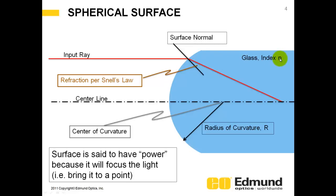Assuming glass index of n. So this surface is said to have optical power because it focuses the light. In other words, it brings it to a point.